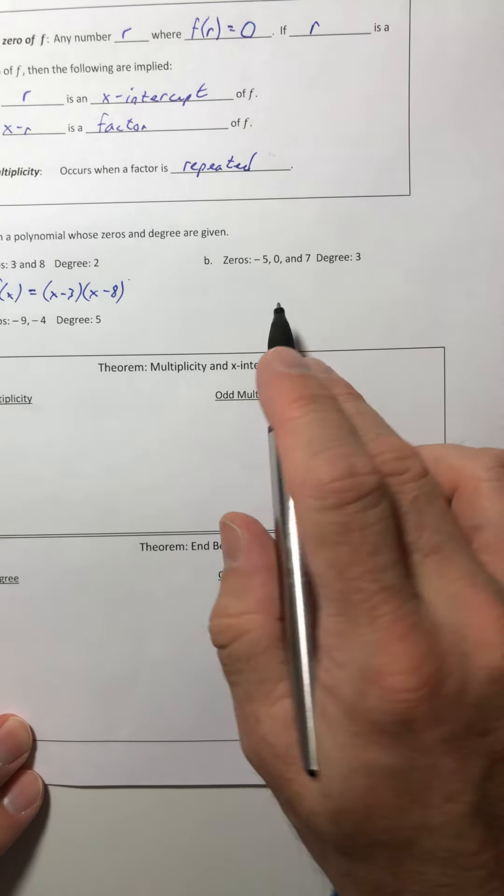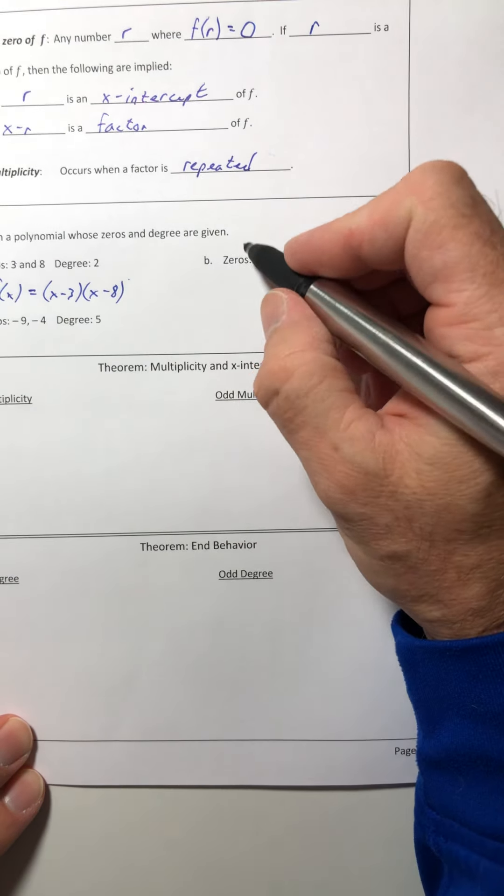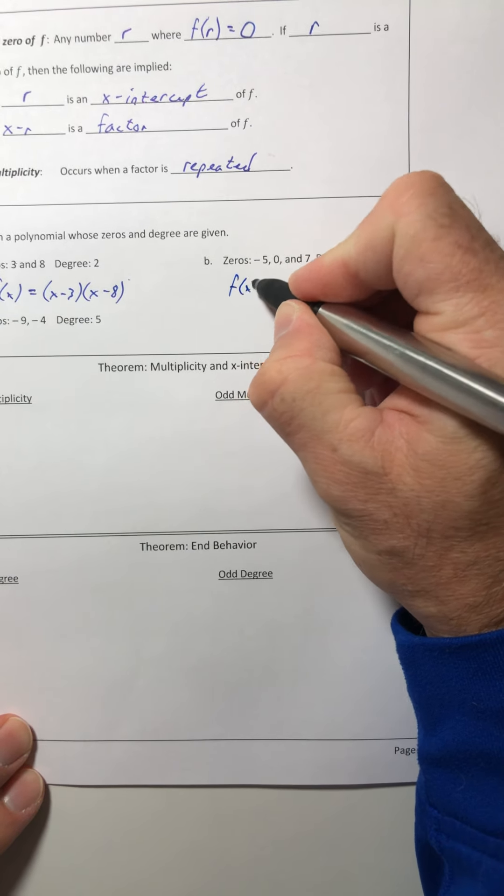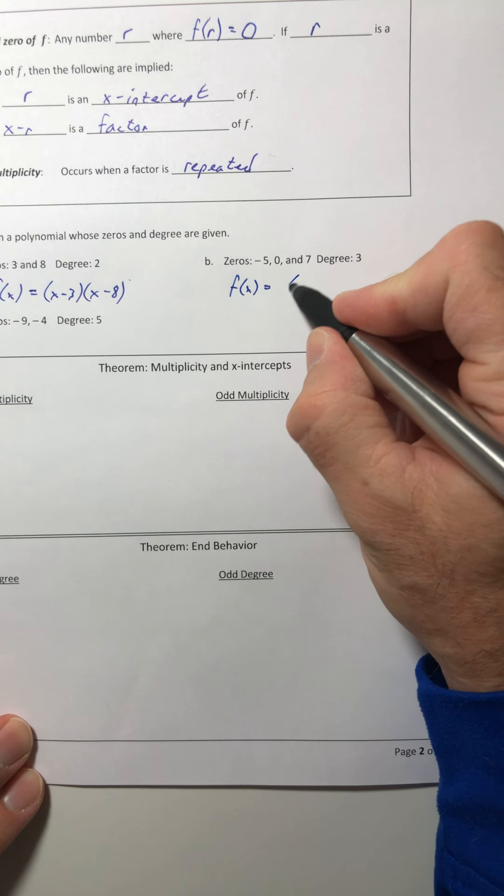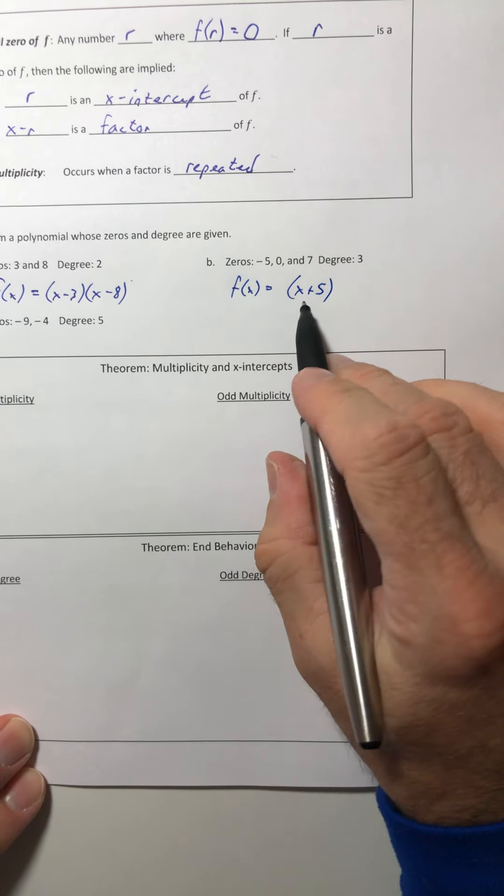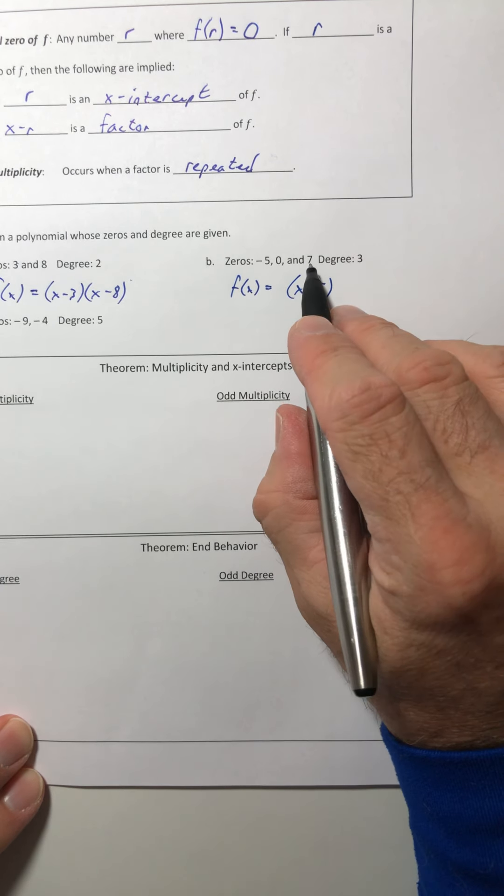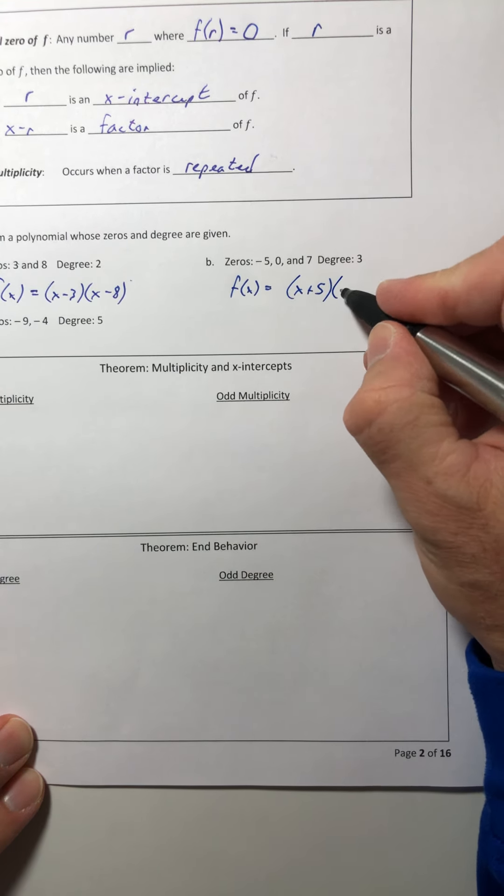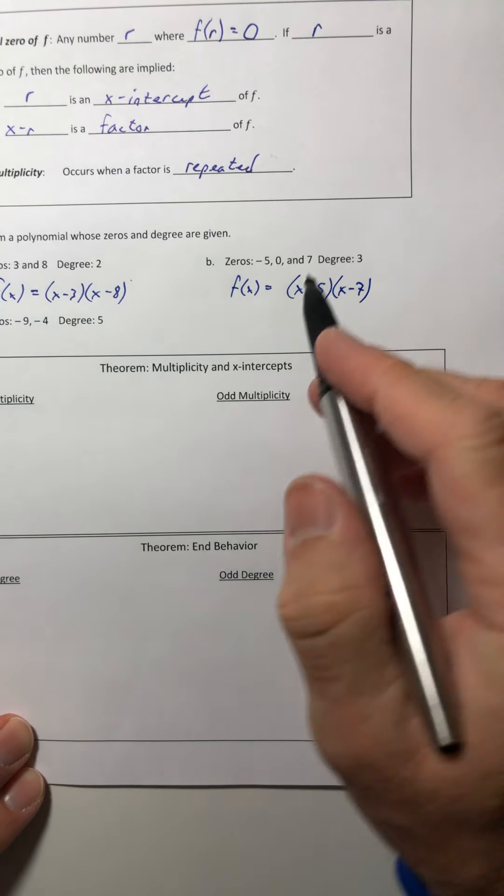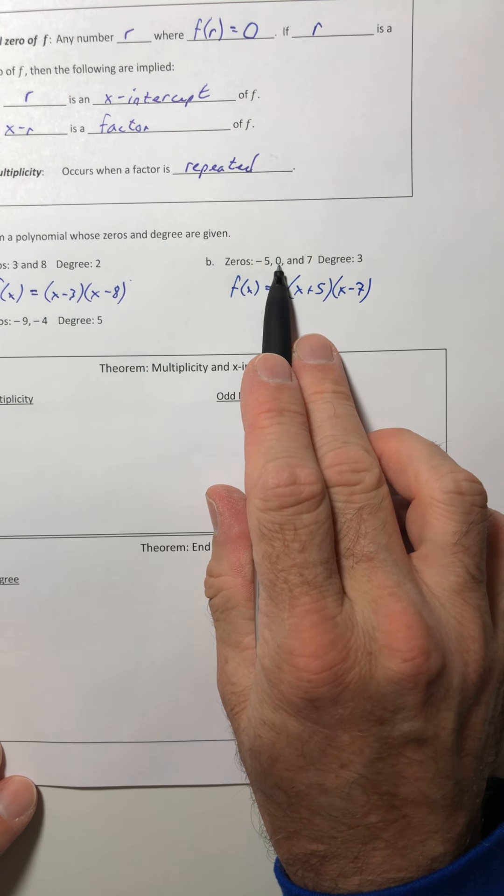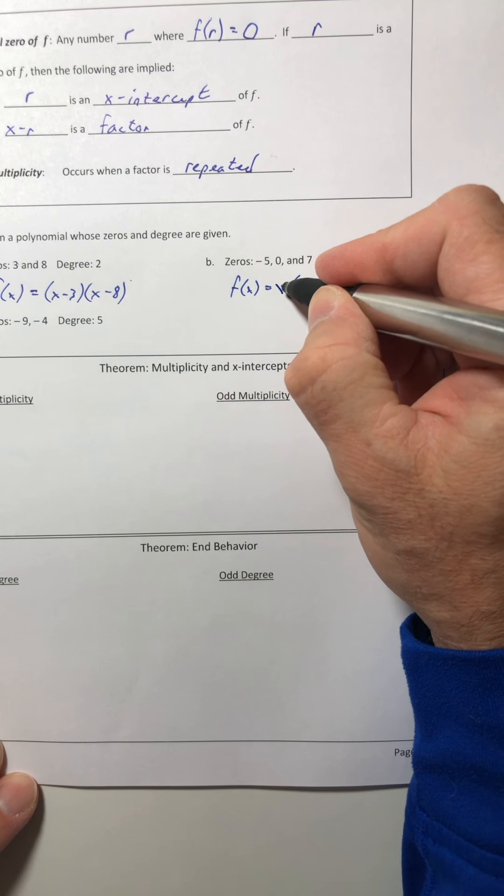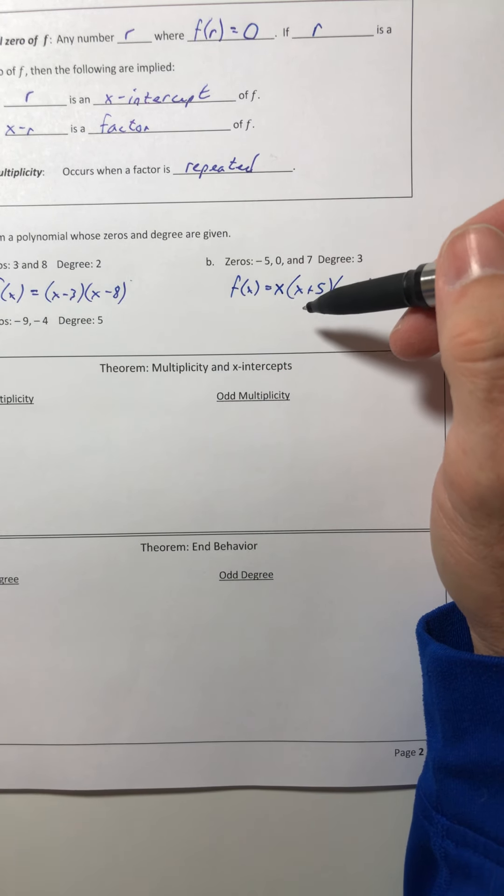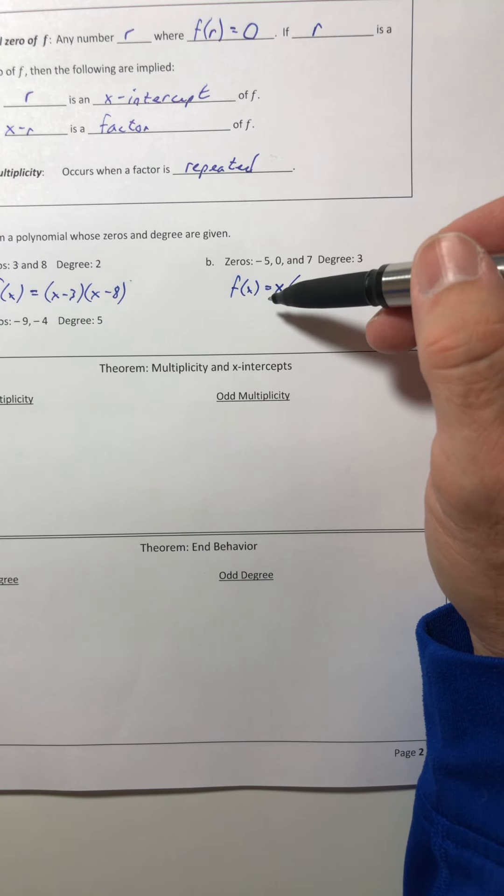Okay, so part b, let's do the same type of thing. So f of x equals, for the negative five, we'll switch the sign so it's an x plus five, the seven, that would be an x minus seven. And when you have a zero of zero, that just means you have an x all by itself. Like you could go x minus zero, but x minus zero is just x.